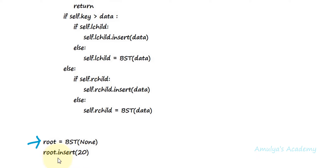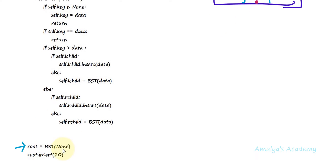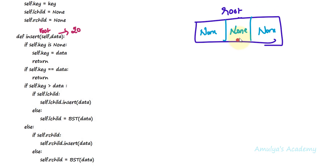Next it will execute the next line: root.insert(20). Here we are calling the insert method on the root object, and the data of the new node is 20. So when I call this method, the method body will be executed. Here data will be 20 and self is nothing but root. So it will execute the body now: if self.key is None — self is root, and root.key is None because we passed None.